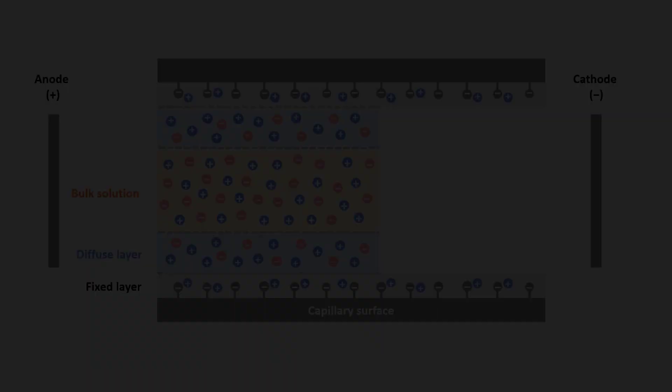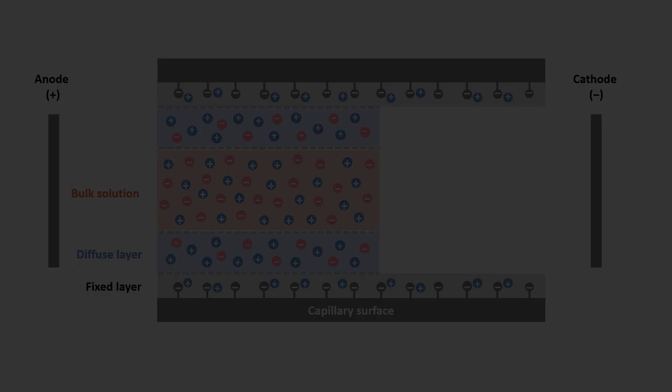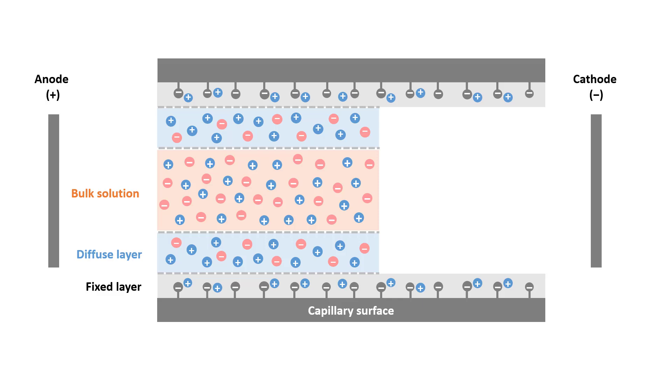Let's take a closer look at what will happen when we apply a voltage across the capillary. On one end, we have the anode, which is positively charged. On the other end, we have the cathode, which is negatively charged. When the voltage is applied across the capillary, the cations in the diffuse layer will be attracted to the negatively charged cathode, dragging the bulk solutions along with them. This is what we call the electroosmotic flow.